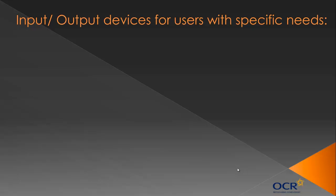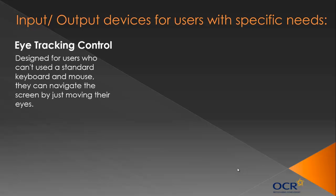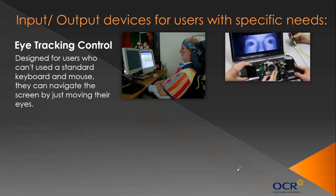The spec also asks you to look at some devices for users with specific needs — so maybe people who are disabled and can't use a computer in the standard way. One way systems have been adapted is eye tracking control, which Stephen Hawking also uses. It's designed for people who can't use standard hardware like a keyboard and mouse, and they can navigate the screen just by moving their eyes.